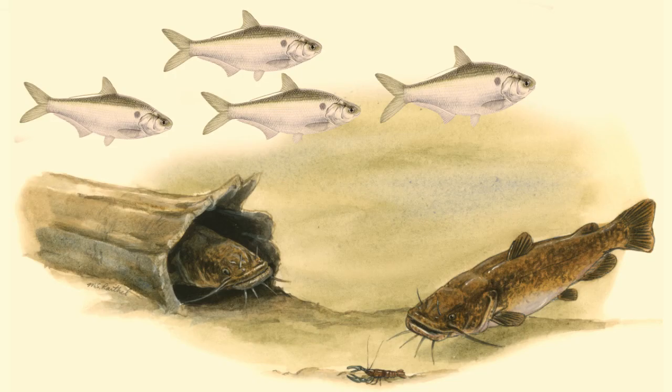Examples of filter feeding fish in Texas are gizzard shad and paddlefish. These species of fish spend most of their time in the open water where they can feed on plankton. In the open water of a pond or a lake, it may seem that plankton have no defense to escape these filter feeders except by luck.